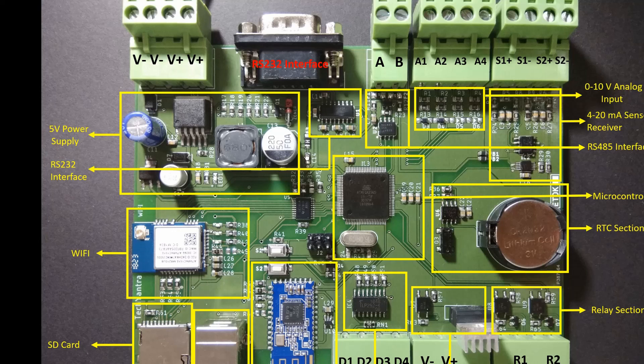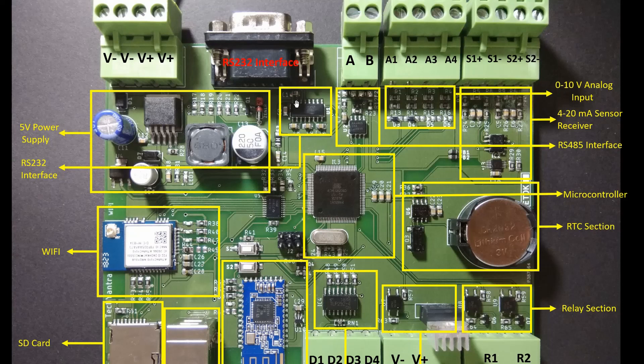The next block is the RS232 interface block. RS232 interface is very popular in industry for short distance communication of around 50 feet. In this section we will see how to design hardware for RS232 interface and how to send data over it. This is the DB9 connector for the RS232 interface.